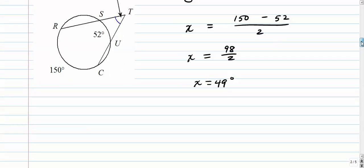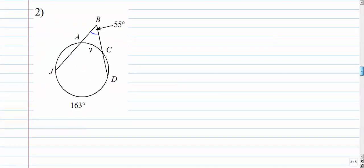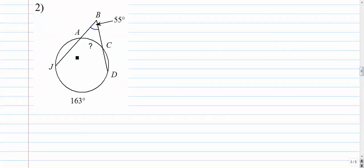Number 2. Angle equals faraway arc minus close arc over 2. In this case, the angle is given. 163 minus x over 2.